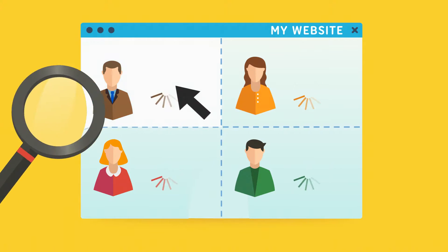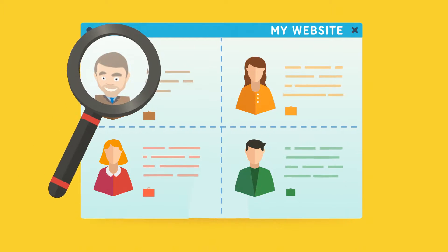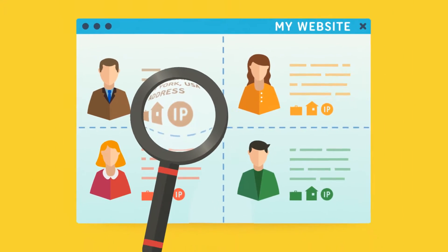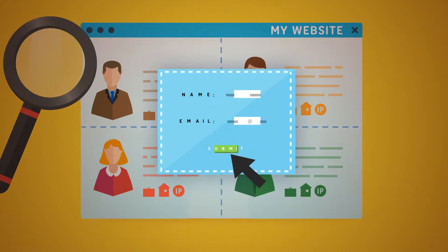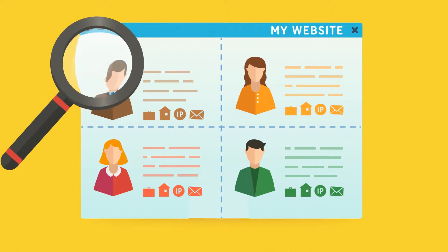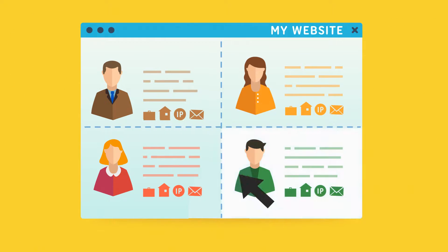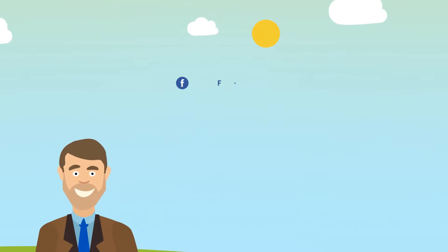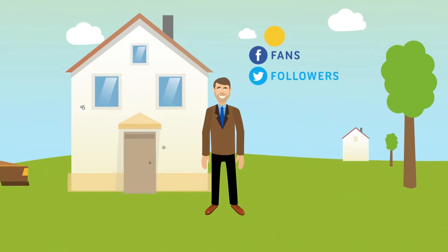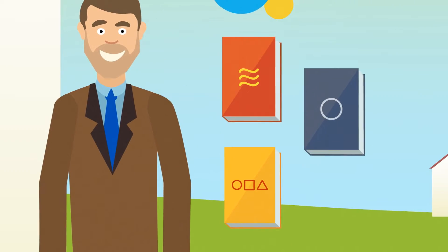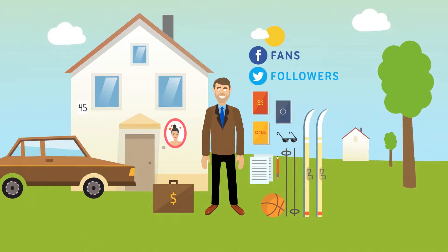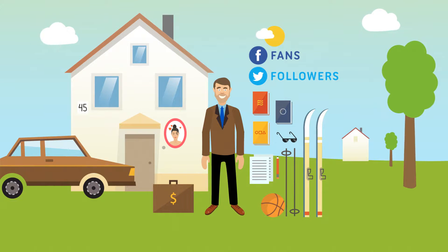Second, you watch in real time as we start building out profiles of each visitor. At first, we're just going to have their IP address. But if they fill out any form on your website, we're going to grab their email address — and that's when Actionetics starts to get really fun. We then go out and use their email address to pull all of their social profiles, how many fans and followers they have, where they live, how much money they make, what magazines they read, and a whole bunch more to help you understand who they are and how you can provide value to them.